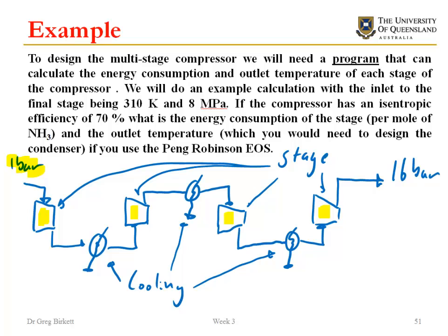In between we've got cooling happening which improves the energy efficiency of the compressor. What we're specifically going to be interested in here is this final stage. Here's our system boundary, and the gas is coming in at 8 megapascals and at 310 Kelvin, and it's coming out here at 16 megapascals. We don't know what temperature it's coming out at, but we do know what the isentropic efficiency is of this stage, and it's 70% or 0.7.